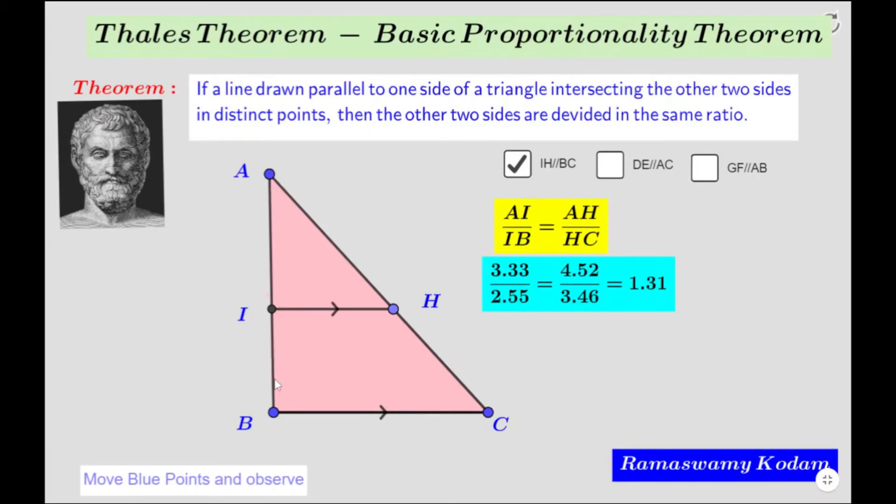Here we can see triangle ABC. We have drawn this line IH parallel to BC. Since this IH is intersecting these two sides AB and AC at distinct points I and H, so AI upon IB will be equal to AH upon HC. Here they have calculated the length of this segment AI is 3.33 and length of IB is 2.55. Similarly, AH upon HC is equal to 4.52 by 3.46 and if you simplify it, you will get the value of ratio as 1.31.